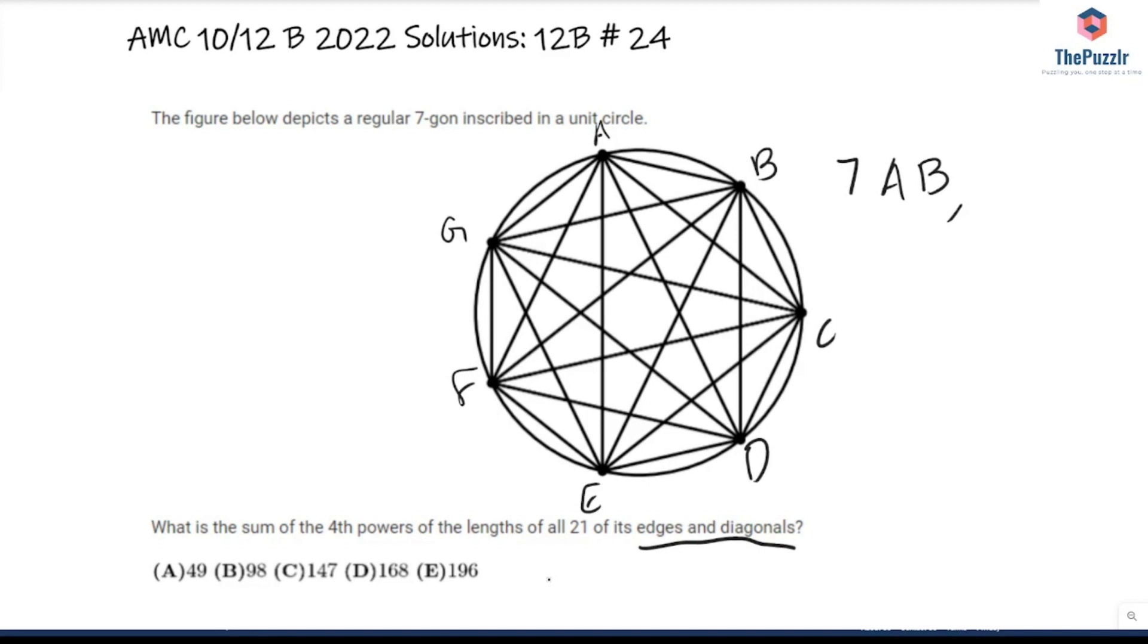Then the next type would be AC, and there's one of those from each point. So there's 7AC. And then something like AD, which is basically when you have 2 points in the middle and 3 points on the other side. So you also have one of those from each vertex. So that's going to give you 7AD. So the problem basically comes down to solve this problem for AB to the power of 4, AC to the power of 4, AD to the power of 4. And then we can just multiply our answer by 7.